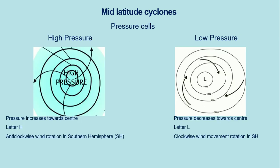Before we go anywhere, we need to revise what you learned in grade 11, as mid-latitude cyclones is a grade 12 topic. When we talk about pressure cells, we have two types: the high pressure cell and the low pressure cell. A high pressure cell will have an 'H' written in the middle when you see it on a map.